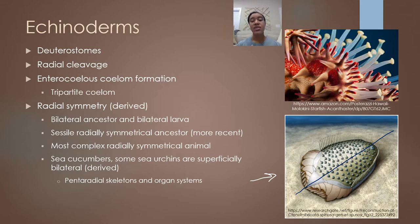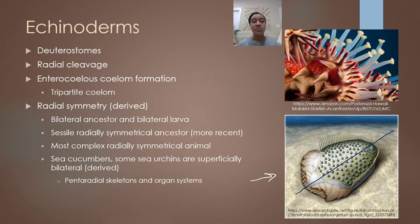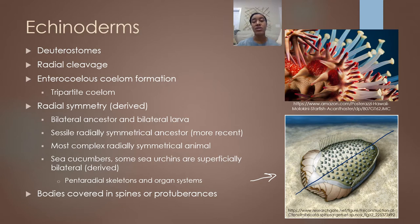The radial symmetry in echinoderms is actually quite unique — they're the most advanced, most complex animals that exhibit this symmetry. Last time we talked about radial symmetry we were looking at cnidarians, which are much simpler animals. It baffles a lot of scientists as to why echinoderms would evolve radial symmetry when there are so many advantages to being bilaterally symmetrical, especially for carnivorous echinoderms.